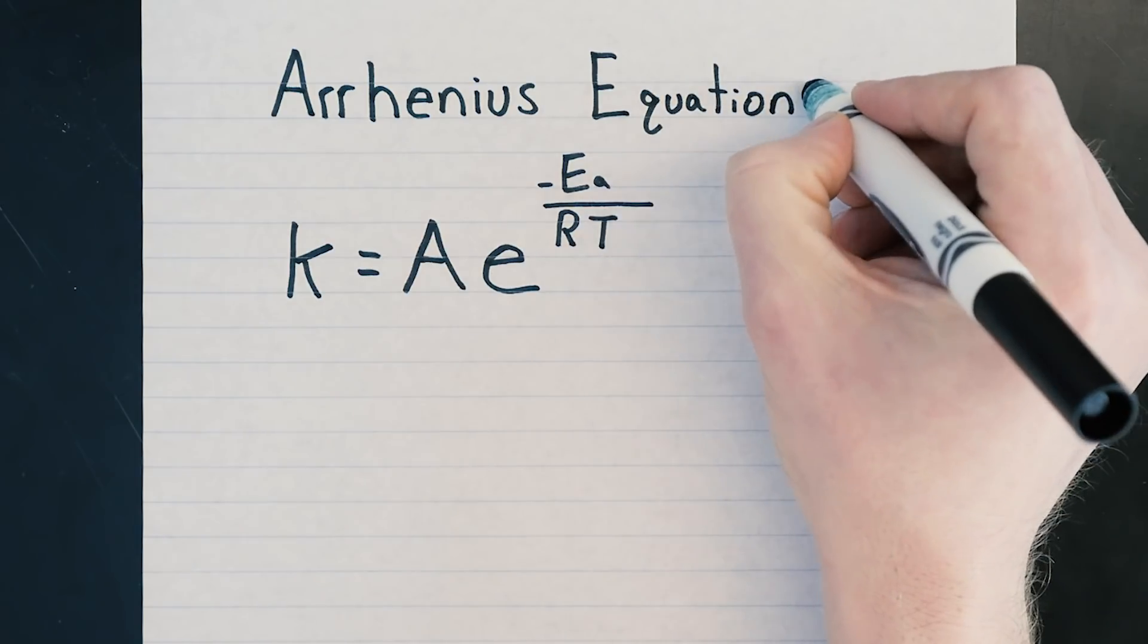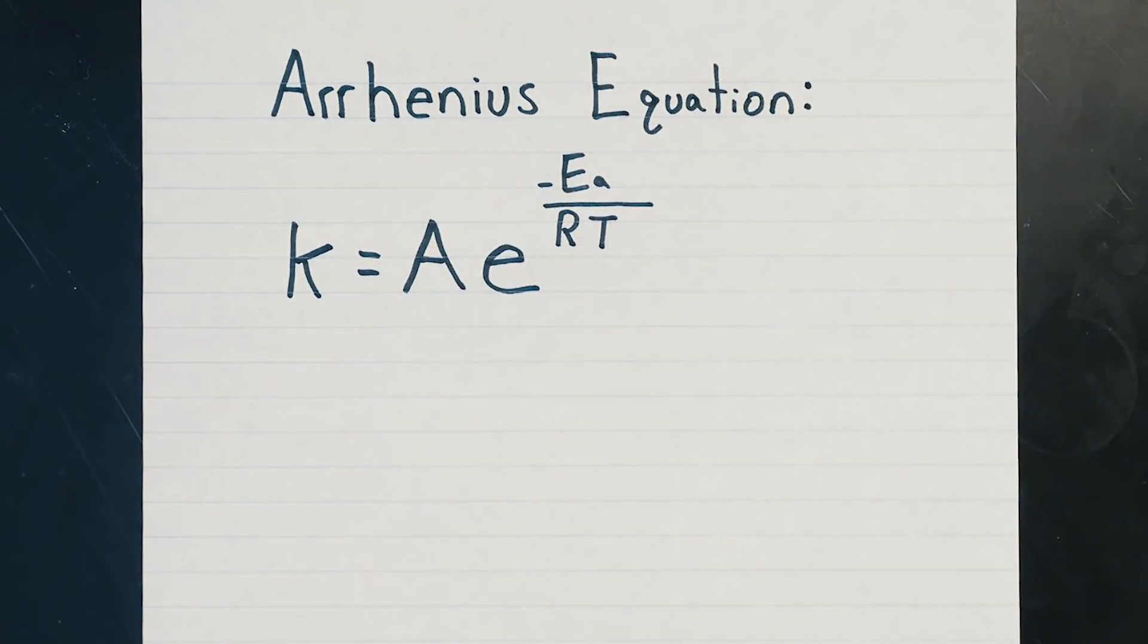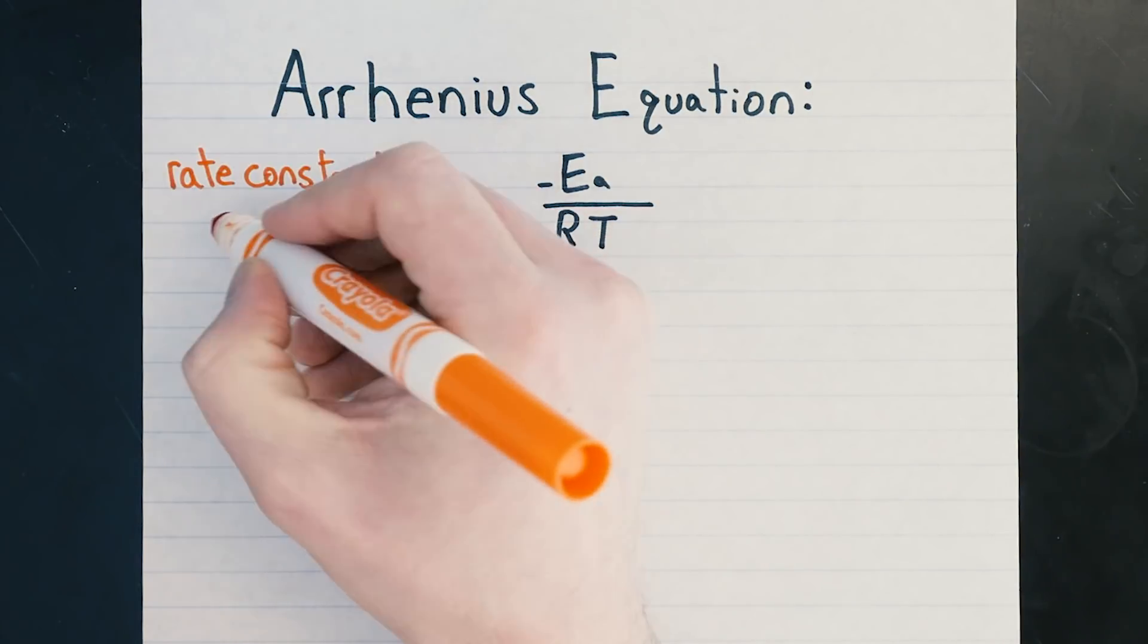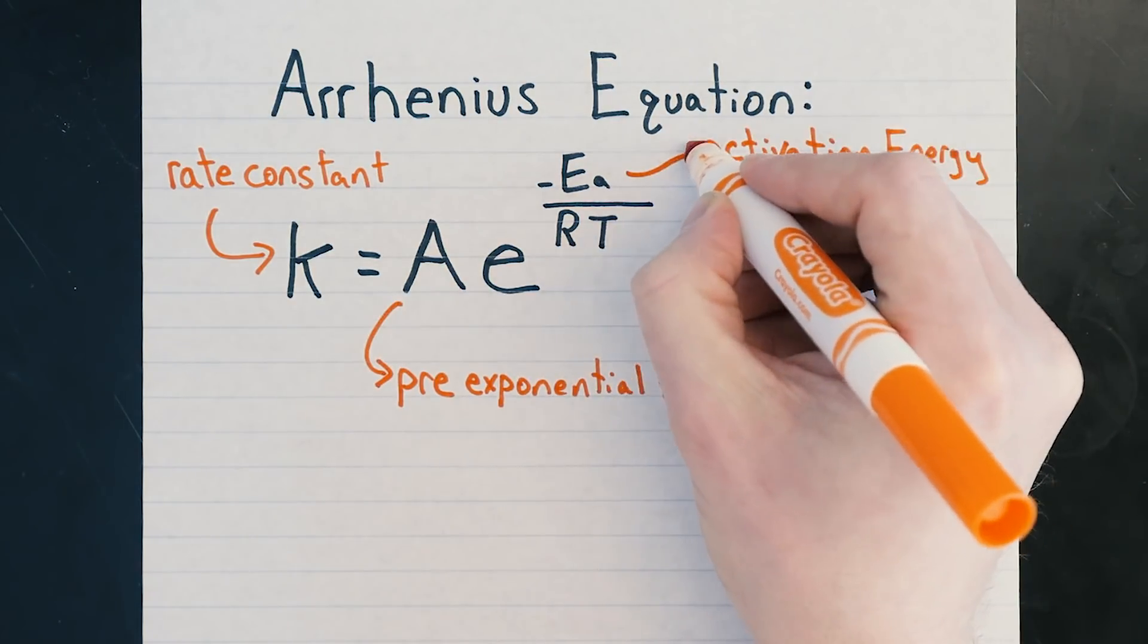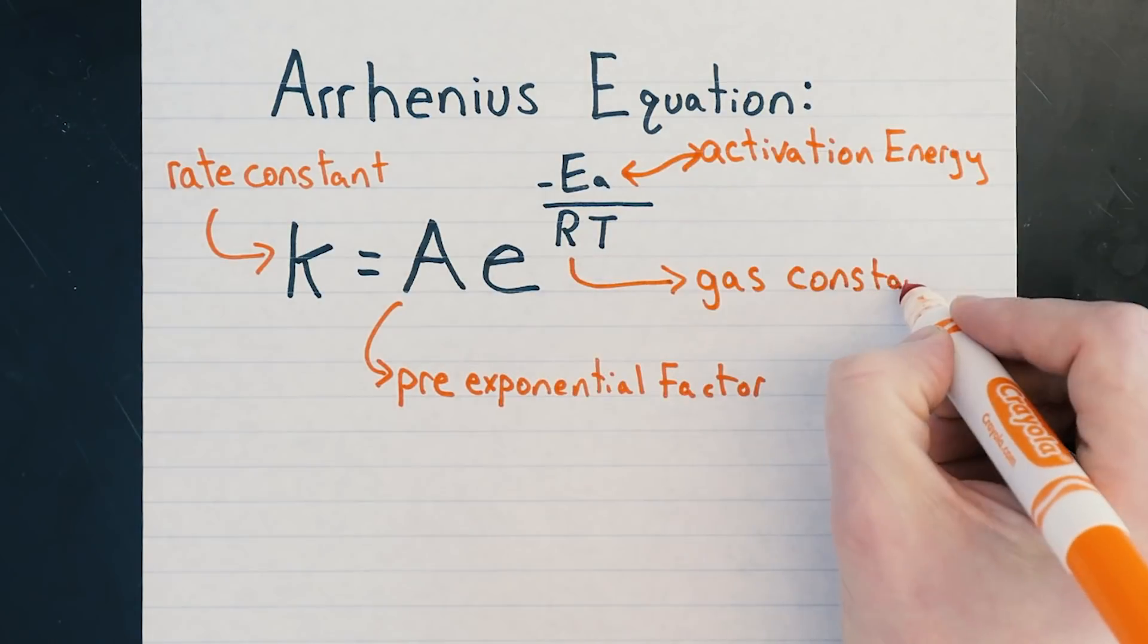Using what's known as the Arrhenius equation, which states that the rate constant is equal to a constant known as the pre-exponential factor multiplied by e raised to the power of the activation energy over R times T. So we can find the activation energy if we measure k.